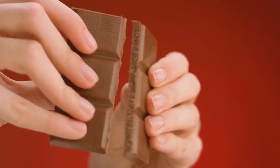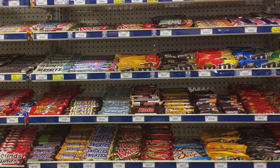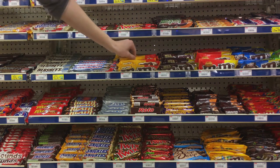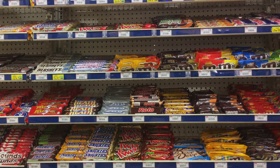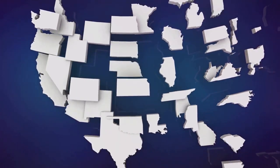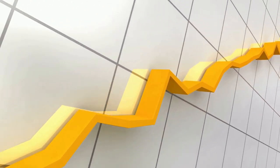Picture yourself in a candy store. If your favorite chocolate bar suddenly becomes cheaper, wouldn't you be tempted to buy more? That's the law of demand in action. It's the inverse relationship between price and quantity demanded.